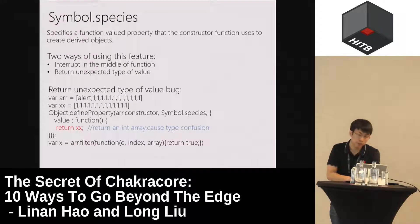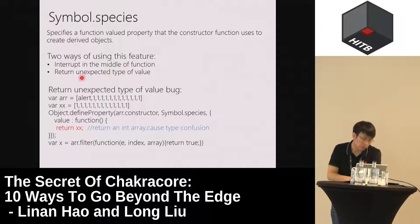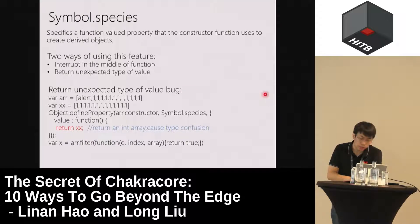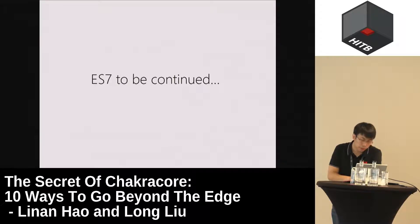Now let's look at another new feature: Symbol.species. This feature allows us to rewrite the default constructor of an object. We can use this feature in two ways: interrupt in the middle of a function, and return an unexpected type of value. The bug shown in the slide is an example of the second usage — a JavaScript constructor returns a JavaScript native int array. Now ES7 is already on the road; new features will bring new security issues.